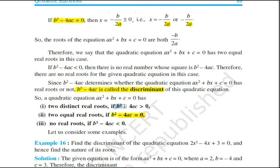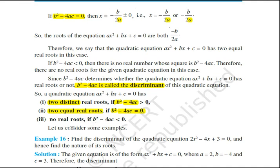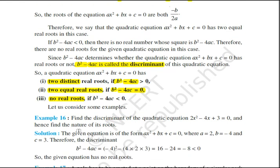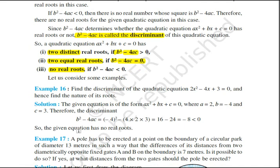If the discriminant is greater than 0, it will have two distinct real roots. If the discriminant is 0, it will have two equal real roots. And if b² - 4ac is less than 0, there will be no real roots. Example 16: Find the discriminant of the quadratic equation and hence find the nature of its roots.